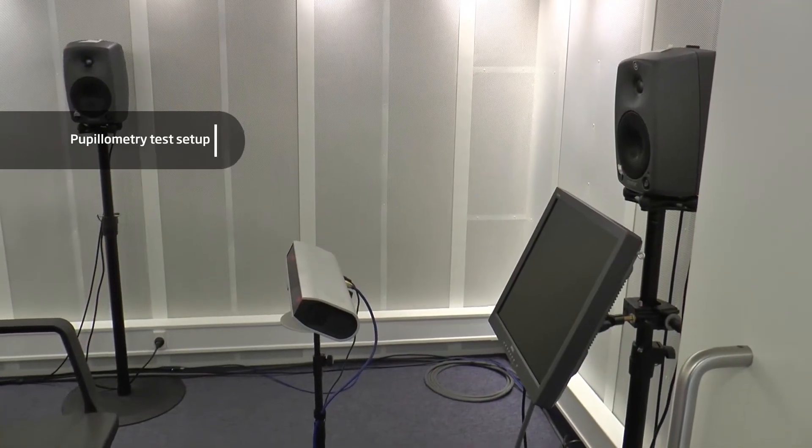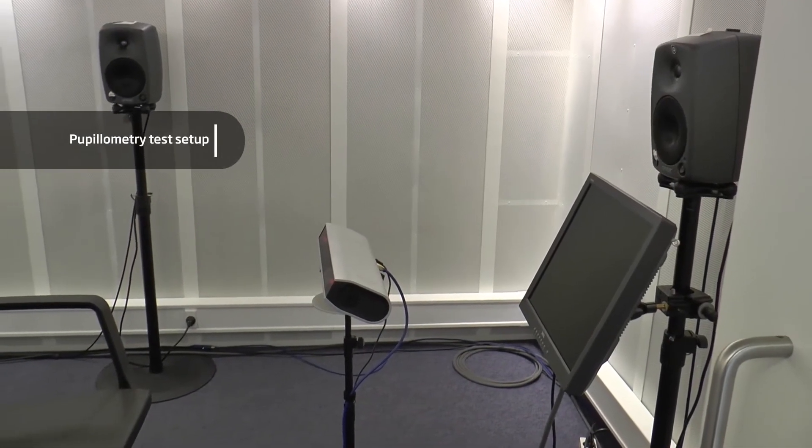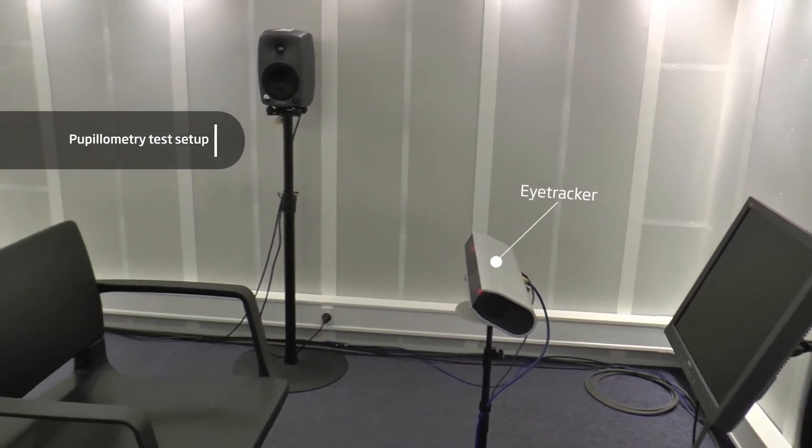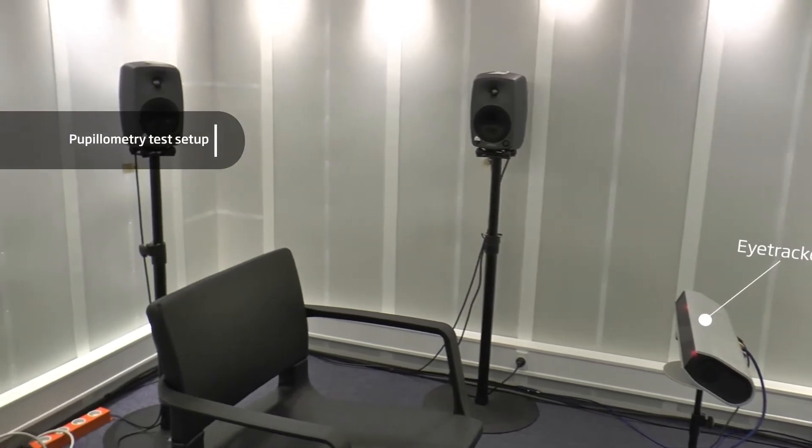The pupil size and reactivity can be measured using pupilometry. In this test, the person is placed in front of an eye tracker which continuously monitors the size of the pupils and the pupil dilation.